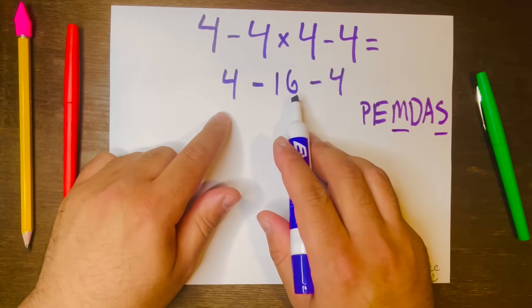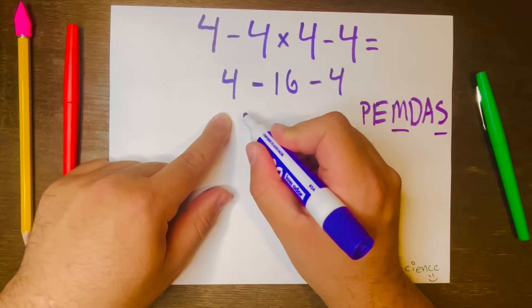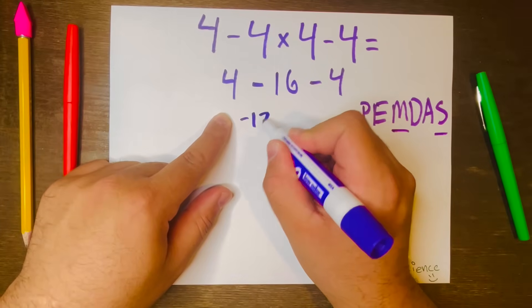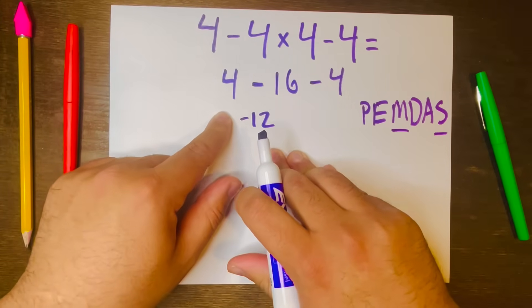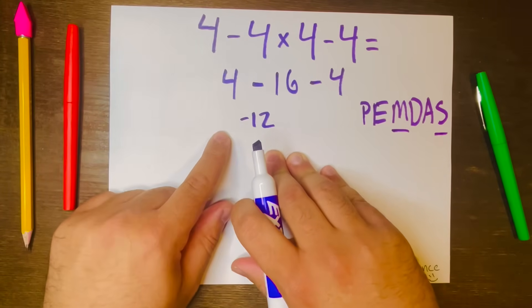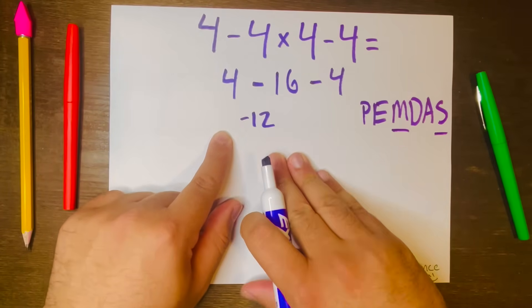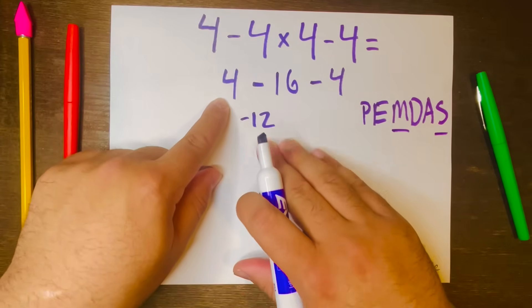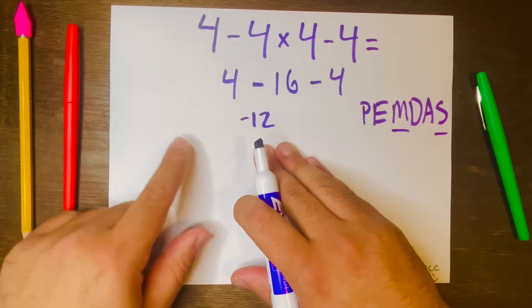Now 4 minus 16 is negative 12, and you're probably wondering how did I get negative 12. Well, think of money—oh actually that'll be the second example. The first example, if you remember the